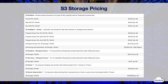Let's look at the S3 storage pricing in the US East 1 region. S3 Standard charges 2.3 cents per gigabyte per month for the first 50 terabytes, with cheaper rates for more data. S3 Intelligent Tiering charges either frequent or infrequent access rates based on access patterns, plus a monthly monitoring and automation fee. S3 Standard IA charges 1.25 cents per gigabyte. S3 One Zone IA charges 1 cent per gigabyte. S3 Glacier charges 0.4 cents per gigabyte. S3 Glacier Deep Archive charges the lowest rate of 0.099 cents per gigabyte, best suited for archiving cold data.